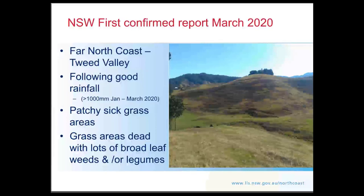In March 2020, we officially confirmed pasture dieback on the far north coast of New South Wales in the Tweed Valley region. That followed very heavy rainfall — from January through to March, the Tweed Valley received around a thousand millimetres after the very dry 2019 season. Reports came in of grasses not responding as expected, beginning to grow, then discolouring and dying, with only broadleaf weeds and legume species remaining.